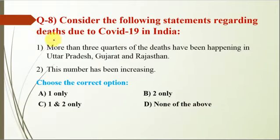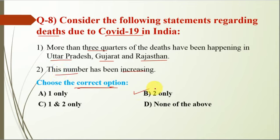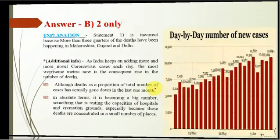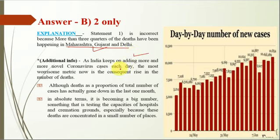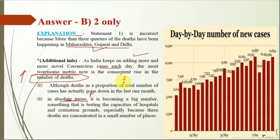Question number 8: consider statements regarding deaths due to COVID-19 in India. Statement 1: more than three-quarters of deaths have been happening in UP, Gujarat, and Rajasthan. Statement 2: this number has been increasing. The correct option is B — statement 1 is incorrect, as more than three-quarters of deaths have been happening in Maharashtra, Gujarat, and Delhi. Although deaths as a proportion of total cases have gone down in the last month, in absolute terms the number is becoming very large — you can check out more in the graph provided.